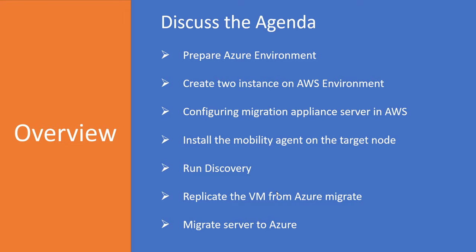After configuring the appliance, we will install the mobility agent for the actual migration. One server will be our appliance server, and the other is the server we are going to migrate. Once we install the mobility agent, we will run discovery from the Azure portal, replicate that VM to Azure, and then actually migrate that instance.